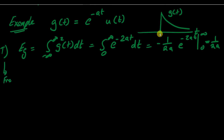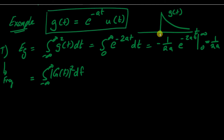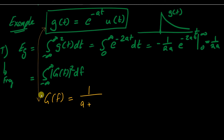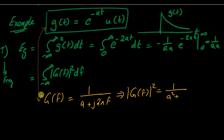Now finding the energy by means of the frequency domain using Parseval's theorem, we integrate |G(f)|² df from minus infinity to infinity. The Fourier transform of G(t) = e^(−at)·u(t) is G(f) = 1/(a + j2πf). Therefore |G(f)|² = 1/(a² + (2πf)²), and we integrate this expression from minus infinity to infinity.